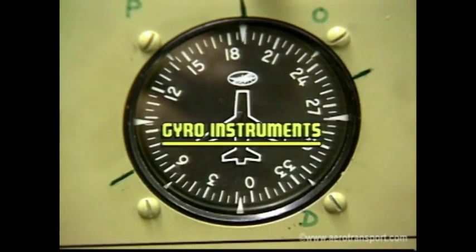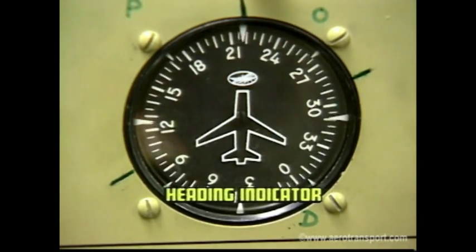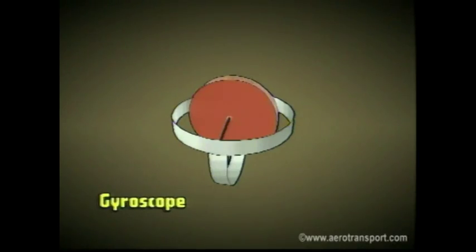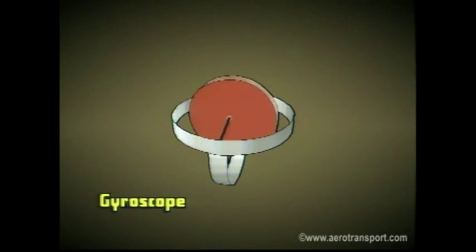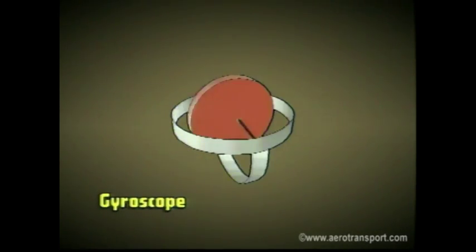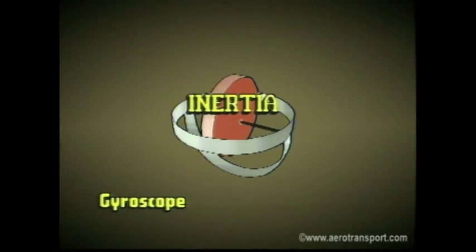Now, a look at the gyro instruments. The three gyro instruments we will discuss are the heading indicator, the attitude indicator, and the turn and bank indicator. To understand how these instruments work, you must understand the gyroscope. A gyroscope is a spinning wheel which rotates at a very high speed, mounted in a gimbal to allow its axle to be pointed in any direction. The gyroscope has two characteristics employed in aircraft instruments: gyroscopic inertia and precession.